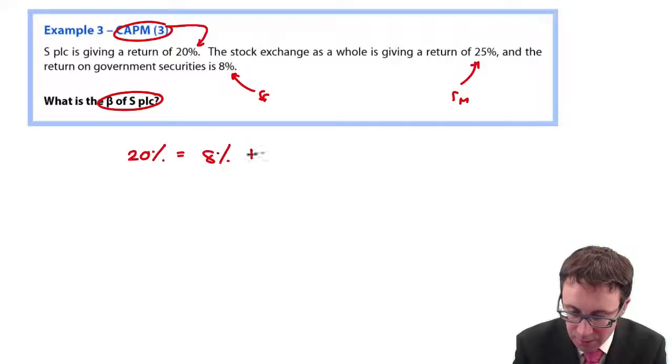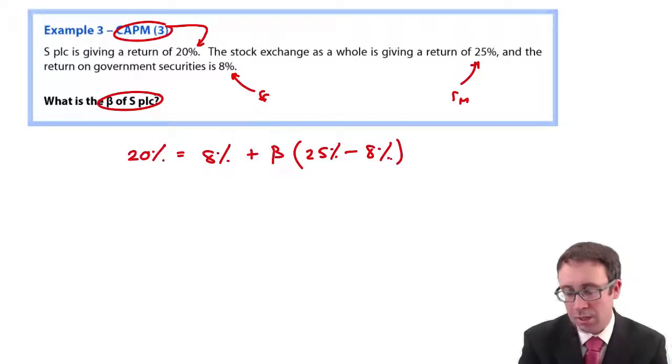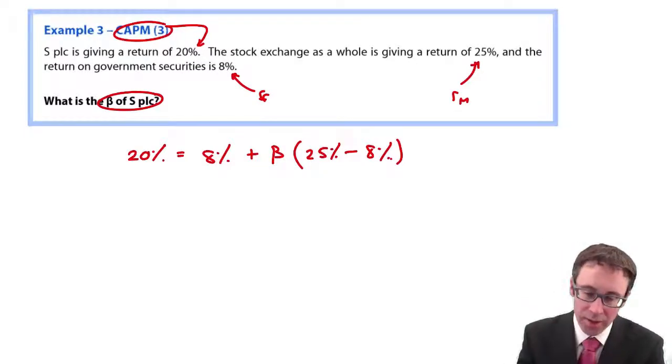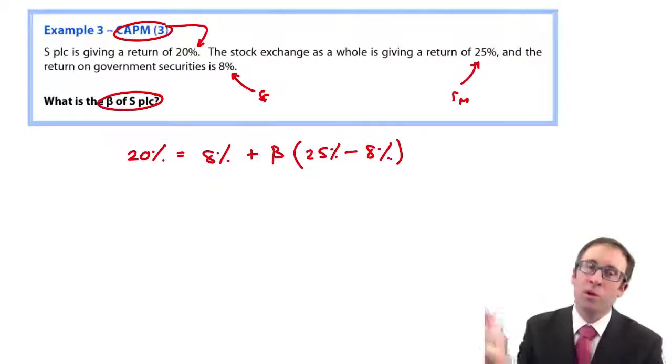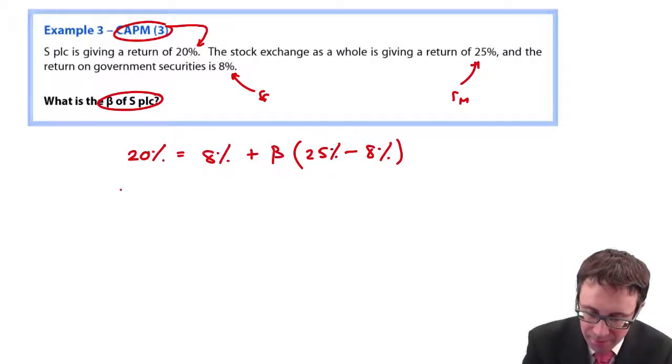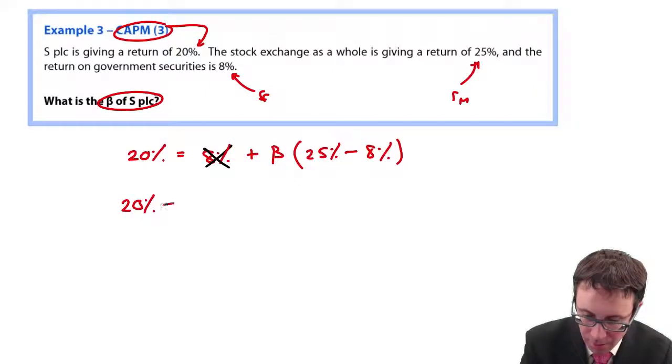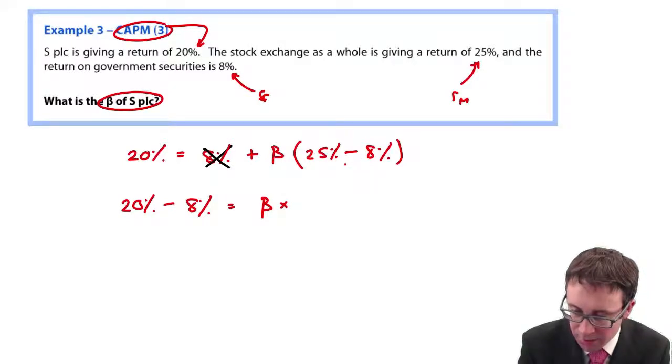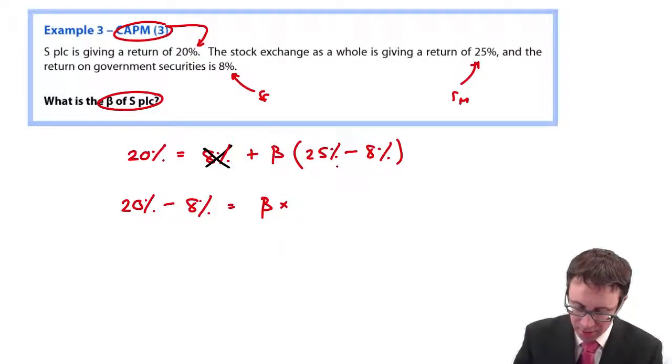So, 8 percent plus beta multiplied by 25 percent less 8 percent. It depends on how good your maths are, how quick you are at doing it. Let's have a look. So, if we subtract 8 percent from both sides, we get rid of the 8 percent there. And then we have 12 percent on the other side is equal to beta multiplied by 25 less 8. So, I'll do it on my calculator. Beta is 17.